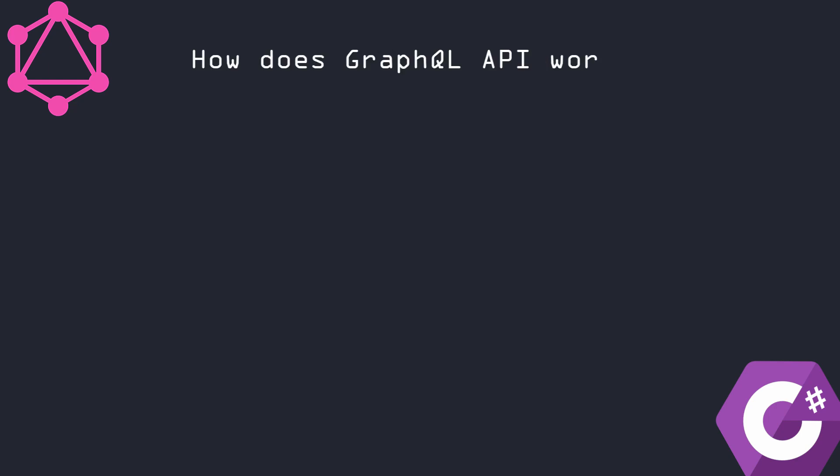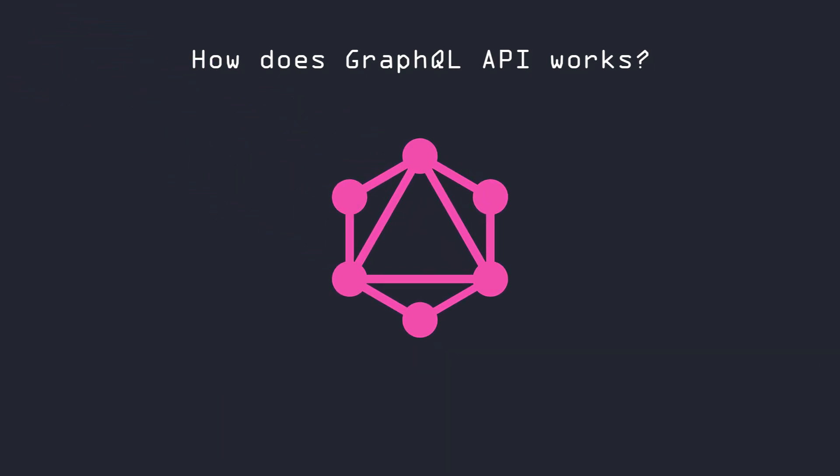And it's time for the last question: how does a GraphQL API work? I hope you already know the answer based on the previous questions. When we are creating a GraphQL API, we need to determine what kind of data we want to allow the user to fetch and how to handle parameters sent by the user. From the consumer's perspective, I think it is easier to use a GraphQL API rather than a REST API because the consumer can determine what data they want to fetch.